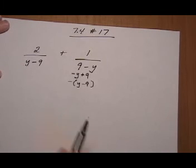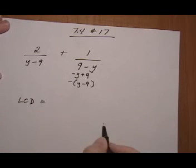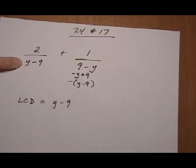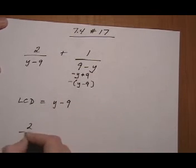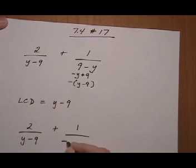But that's okay, it's easy to take care of because what I want to do is make my LCD equal to the simpler of the two, which is Y minus 9. And I'm going to rewrite the expression we have. Now we have 2 over Y minus 9 plus 1 over minus times Y minus 9.